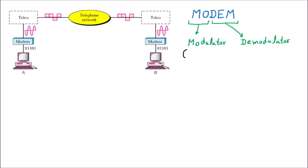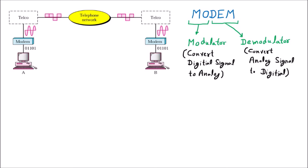The modulator converts digital signal to analog signal, and the demodulator is the reverse — it converts analog signal to digital. So the modem is used for converting analog to digital and digital to analog. In our earlier topic we discussed the DTE and DCE cable, where we saw that DCE is the Data Circuit Terminating Equipment, used for sending and receiving. We can say that the modem is an example of DCE.